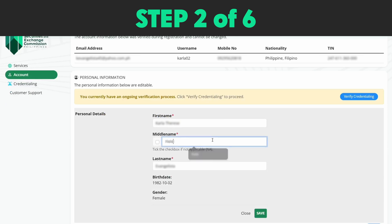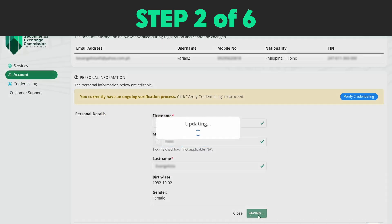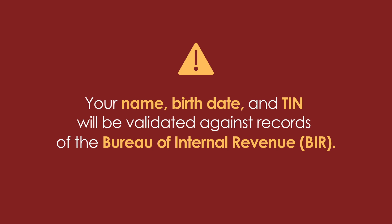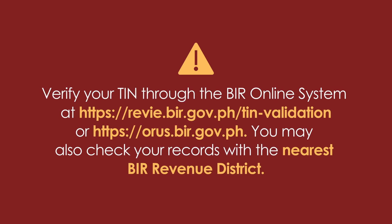Double-check if your information is correct, then click Save. Note that your name, birth date, and TIN will be validated against records of the Bureau of Internal Revenue. If you are prompted that your TIN does not match BIR records or cannot be found, verify your TIN through the BIR online system. You may also check your records with the nearest BIR revenue district.